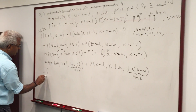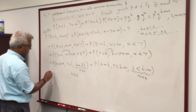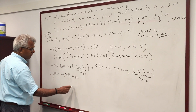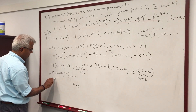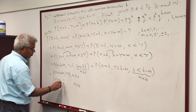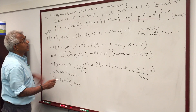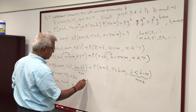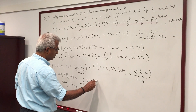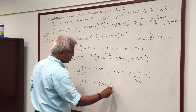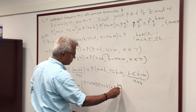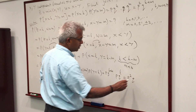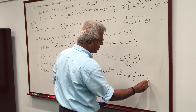So we have the answer: if M is positive, only the first term contributes, giving P(X=K+M, Y=K). Since X and Y are independent, this is the product P(X=K+M) · P(Y=K), which equals PQ^(K+M) · PQ^K, giving P²Q^(2K+M) for M non-negative.